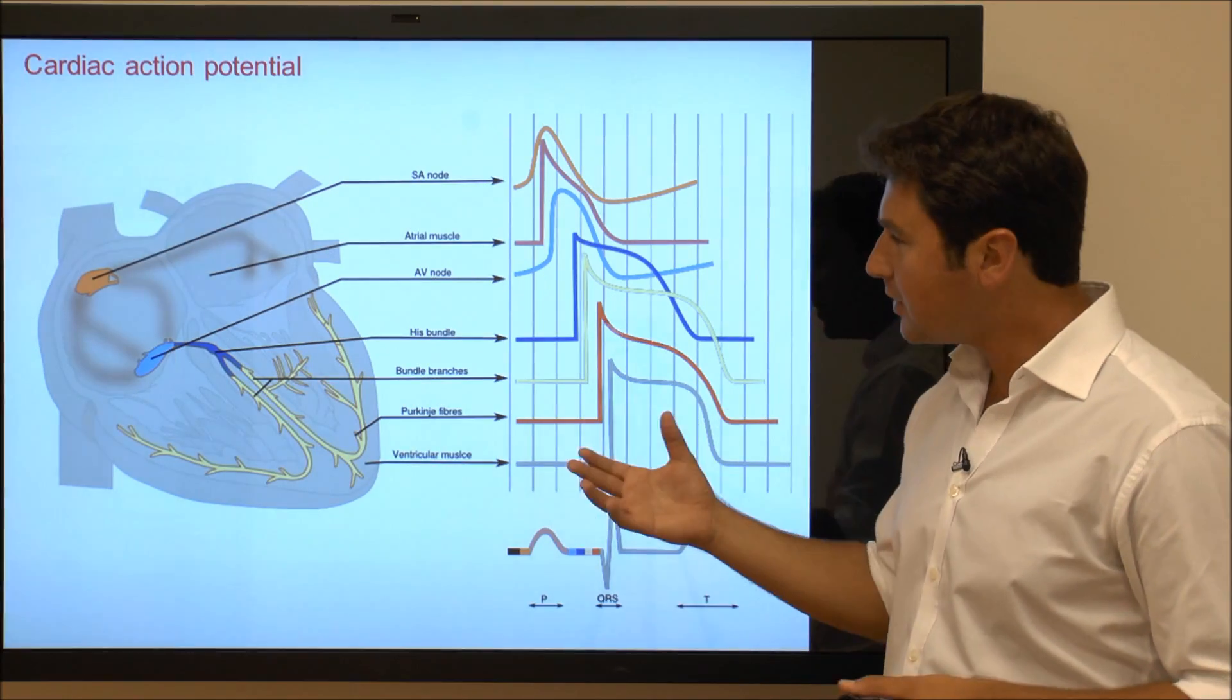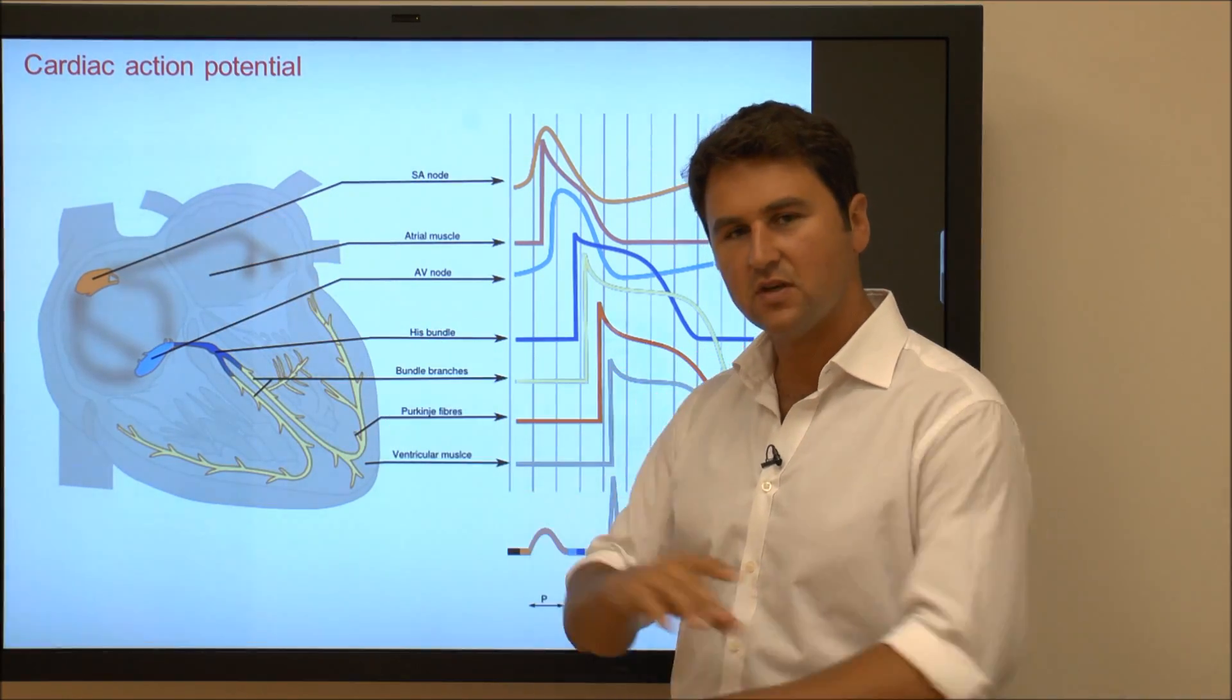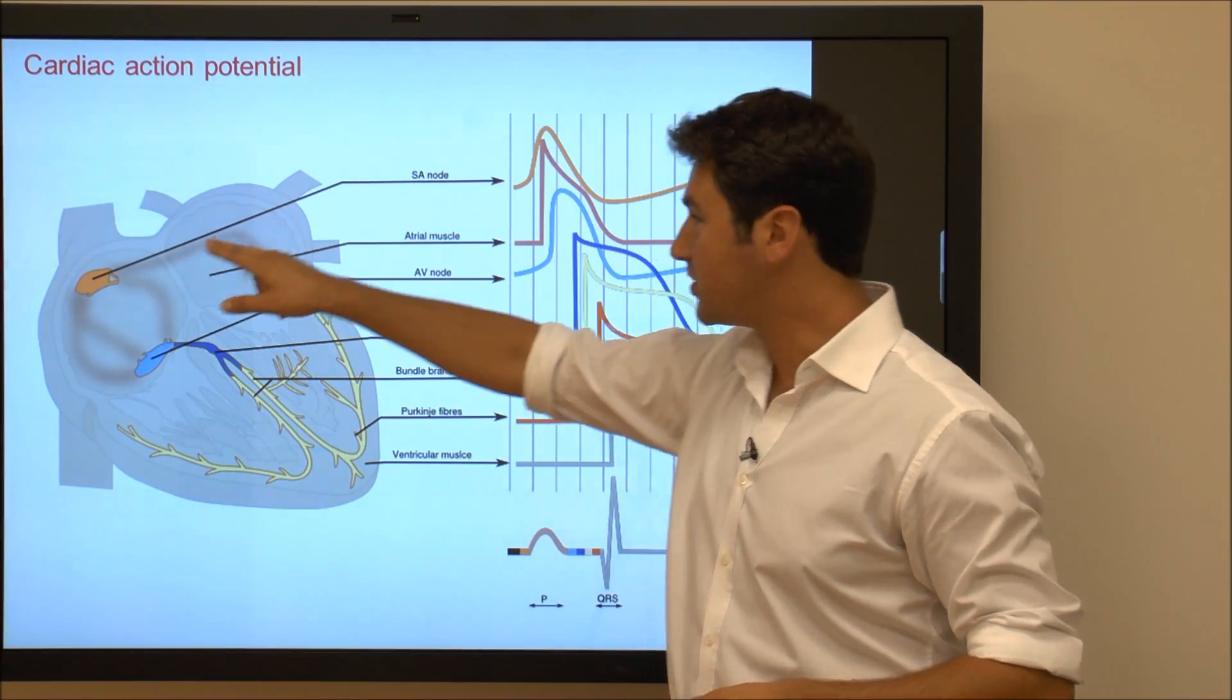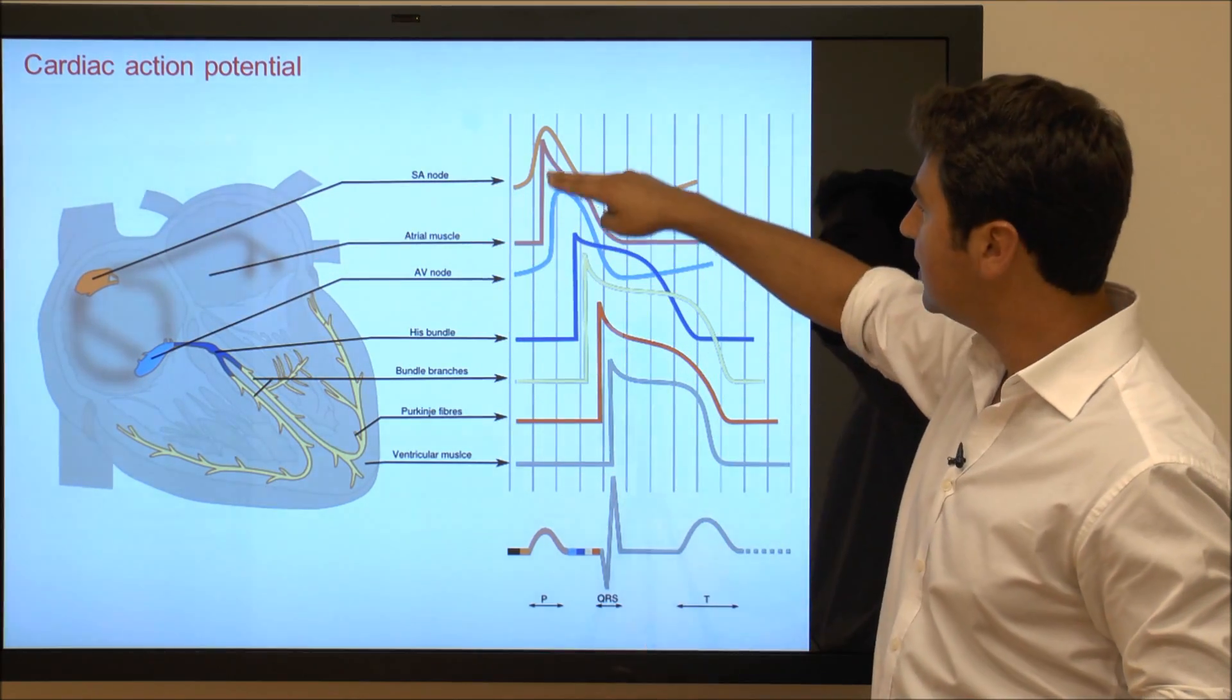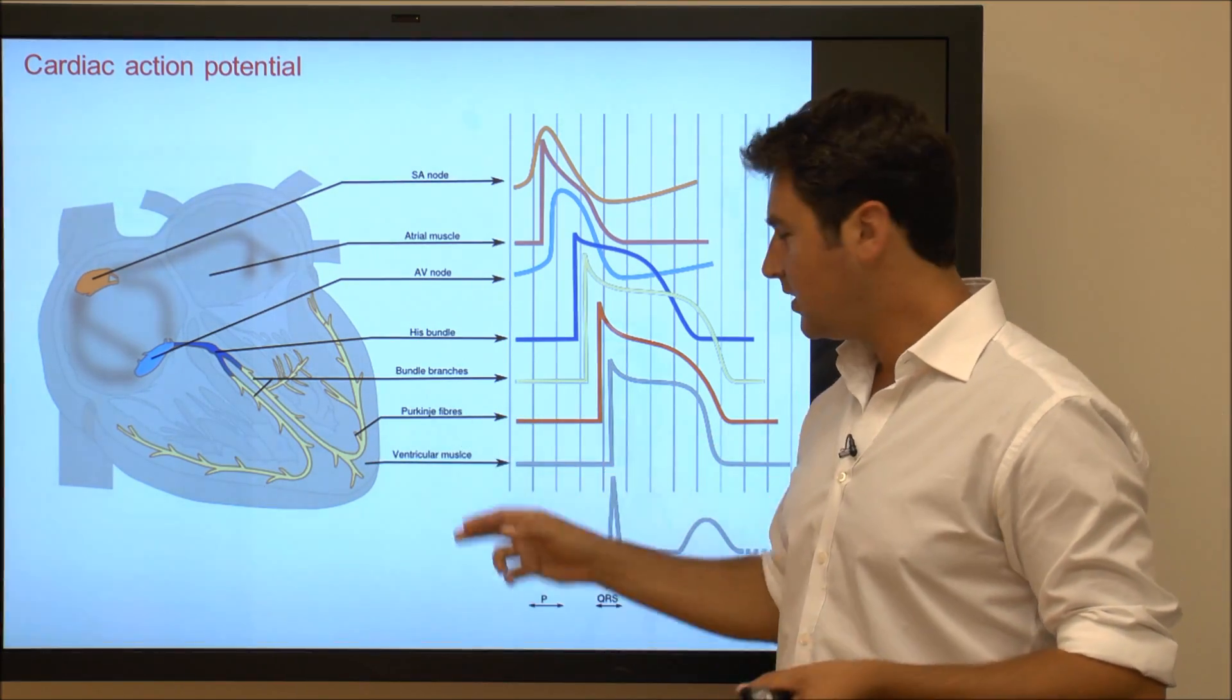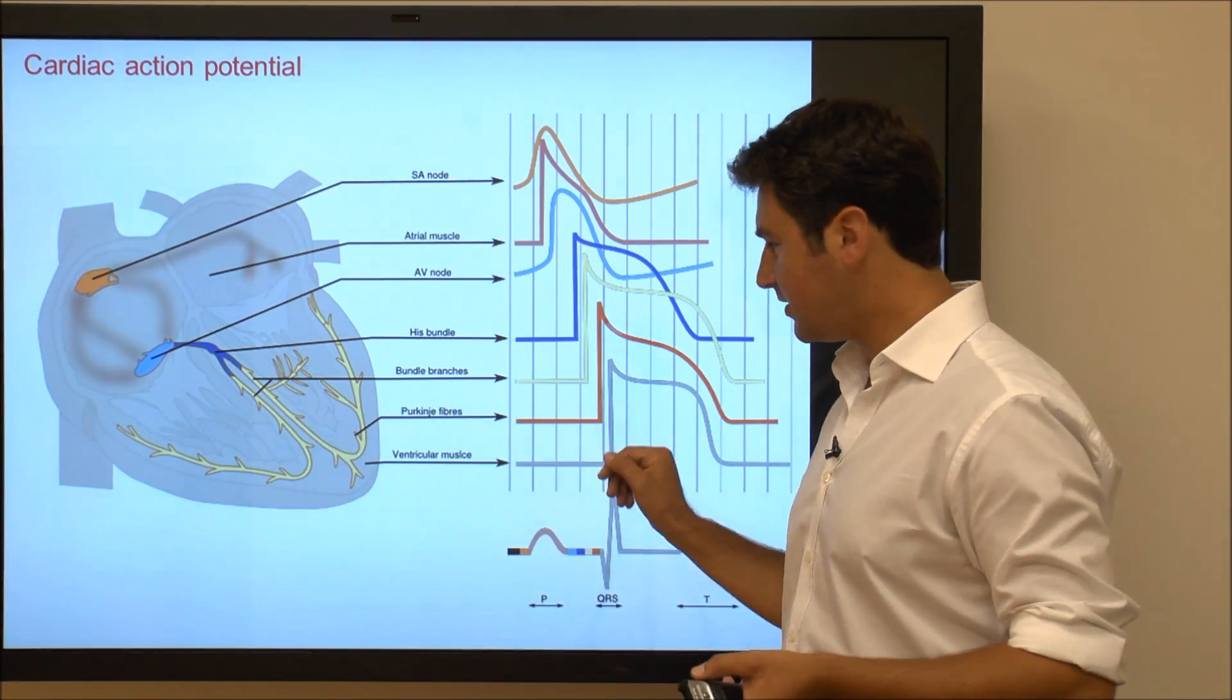It's because different parts of the heart perform different functions, so you would expect that the sinoatrial node, which consists mainly of pacemaker cells, has a very different action potential to the ventricular muscle which consists of cardiac myocytes.